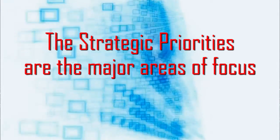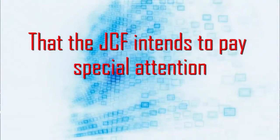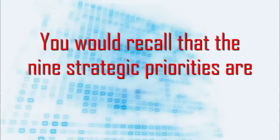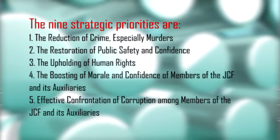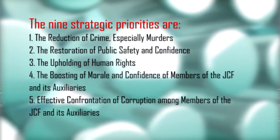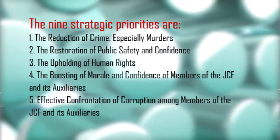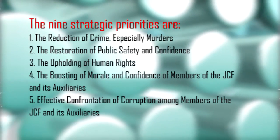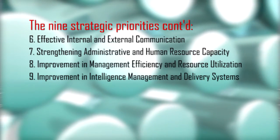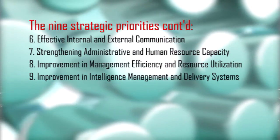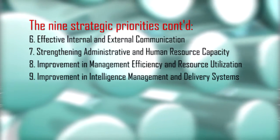The strategic priorities are major areas of focus that the JCF intends to pay special attention to. The 9 strategic priorities are: 1. The reduction of crime, especially murders; 2. The restoration of public safety and confidence; 3. The upholding of human rights; 4. The boosting of morale and confidence of members of the JCF and its auxiliaries; 5. The effective confrontation of corruption among members of the JCF and its auxiliaries; 6. Effective internal and external communication; 7. Strengthening administrative and human resource capacity; 8. Improvement in management efficiency and resource utilization.